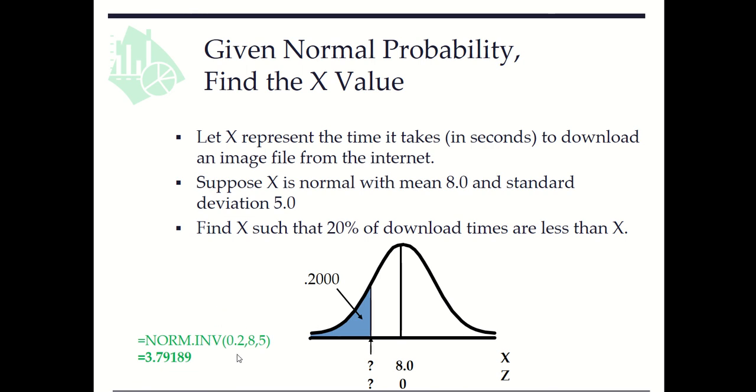The first parameter is the cumulative probability 0.2. The second parameter is the mean 8. The third parameter is the standard deviation 5. So here is the value 3.79189.